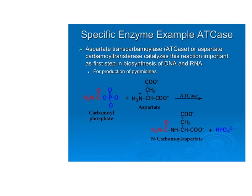What happens here is we have a carbamoyl group — a functional group that's another name for an amide group. Acetyl is the simplest of the ketone groups; similarly, carbamoyl would be the simplest of the amide groups. The carbamoyl group gets transferred from carbamoyl phosphate onto aspartate.